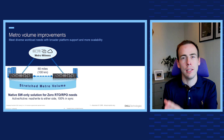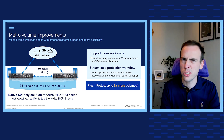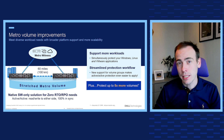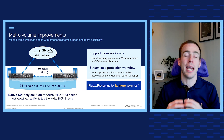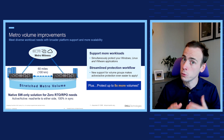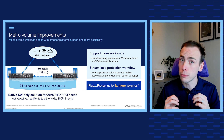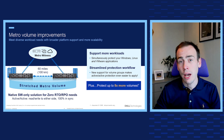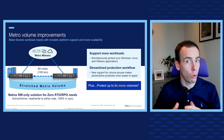Now in the PowerStore 4.0 release we're enhancing the functionality of native metro by increasing the scalability of metro volumes eight times, by adding support for both Linux and Windows workloads, and adding the ability to protect volume groups as well as individual volumes. Now you really can protect any critical workload without disruption or data loss.